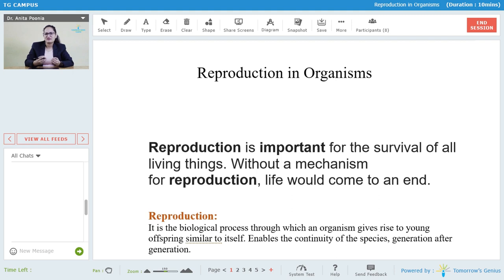So how can we define reproduction? Reproduction is that biological process through which an organism gives rise to its own kind. Reproduction enables the continuity of species generation after generation. Reproduction are of two types.